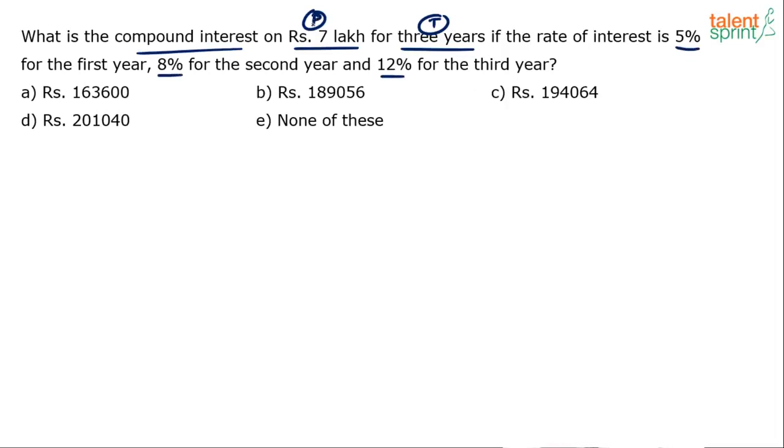So P, T, R, all the three variables are given to you. All you have to do is do the compound interest calculation. Now you can follow the concept of percentages that we have discussed. You know that compound interest can be calculated using effective percentage.